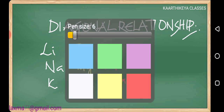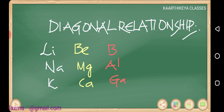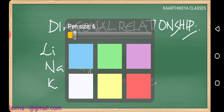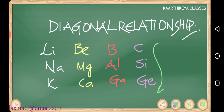When you look at a particular group — for example, lithium, sodium, potassium — there are similarities; it's a regular trend, and it is expected. But the interesting thing is lithium and magnesium have some relation, beryllium and aluminium, and boron and silicon. These three pairs show some similarities in their properties. The reasons we will discuss, and this particular relation is called a diagonal relation.